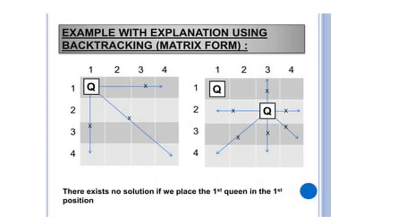With Queen 1 in column 1 and Queen 2 in column 3, Queen 3 can only go in the second or fourth column. If we place Queen 3 in the second column, Queen 2 attacks it. If we place Queen 3 in the fourth column, Queen 2 also attacks it. There is no valid position for Queen 3, so there is no solution when Queen 1 is in the first position.